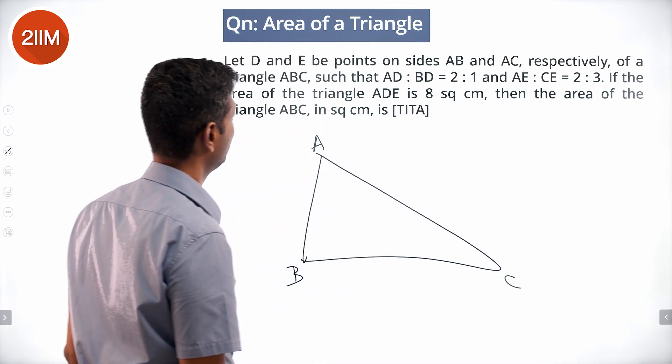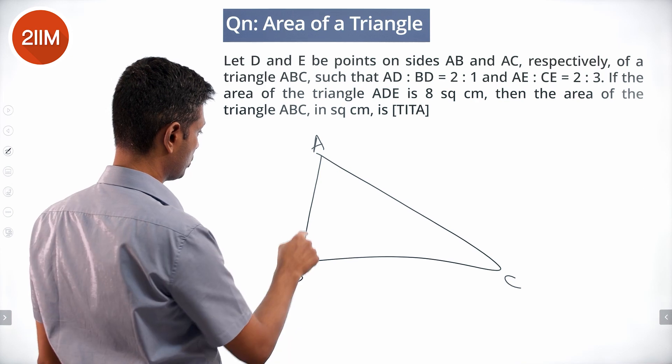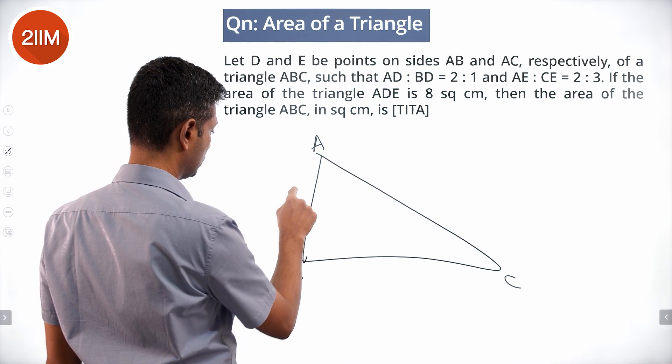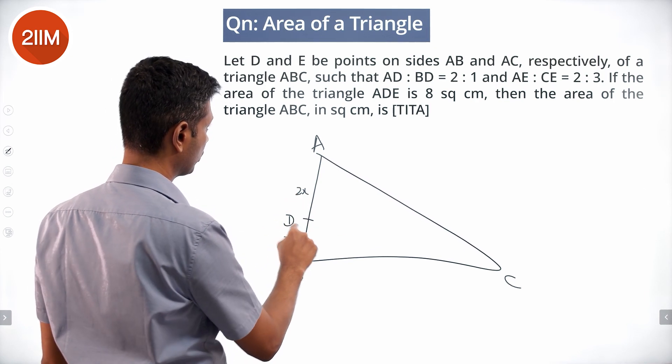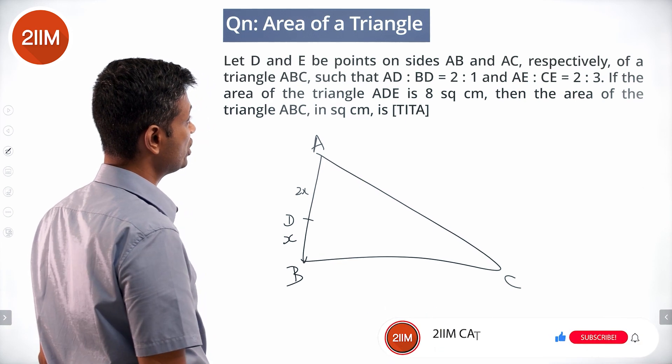This is a triangle ABC such that AD is to BD is 2 is to 1, and AE is to CE is 2 is to 3.